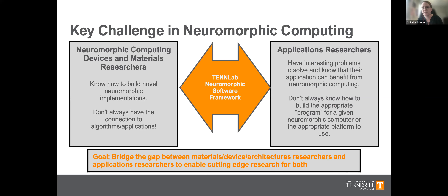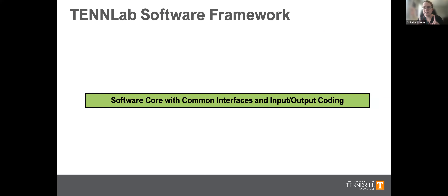In the TenLab research group, we're really trying to bridge the gap between people developing neuromorphic hardware implementations and applications researchers who have interesting problems to solve but don't have the expertise to use a neuromorphic computer. So we've been building our TenLab neuromorphic software framework for about eight years. At its core, we have software with common interfaces and we provide input and output coding mechanisms — taking data, turning them into spikes, and converting spikes back into classification labels or actions.